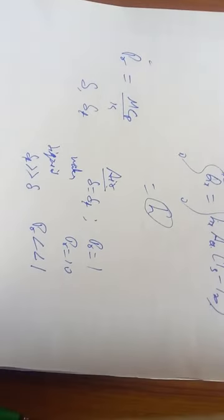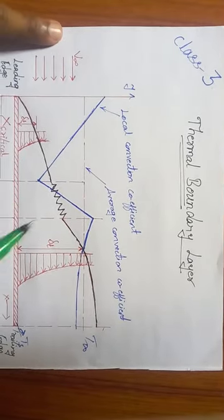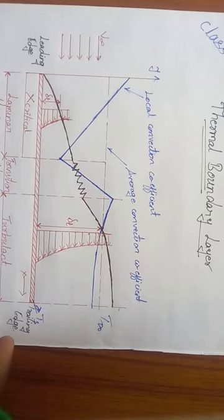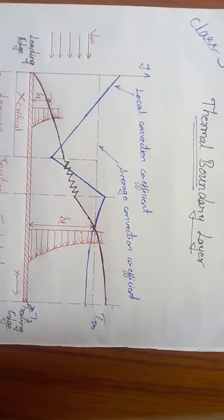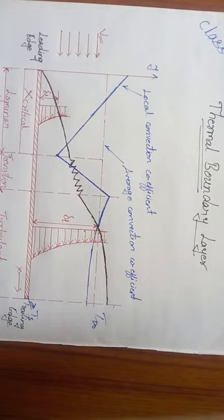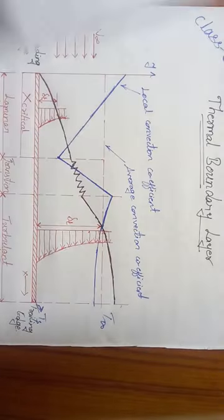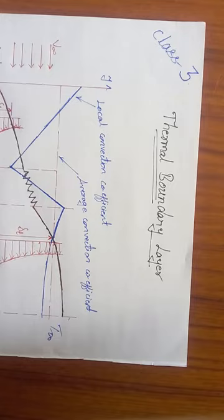These are all the points you need to analyze when explaining the thermal boundary layer—and you must mention them in examinations. Revise this video once more; there is nothing difficult. The entire concept lies with ∂T/∂y for the thermal boundary layer and ∂v/∂y for the velocity boundary layer. Thank you.